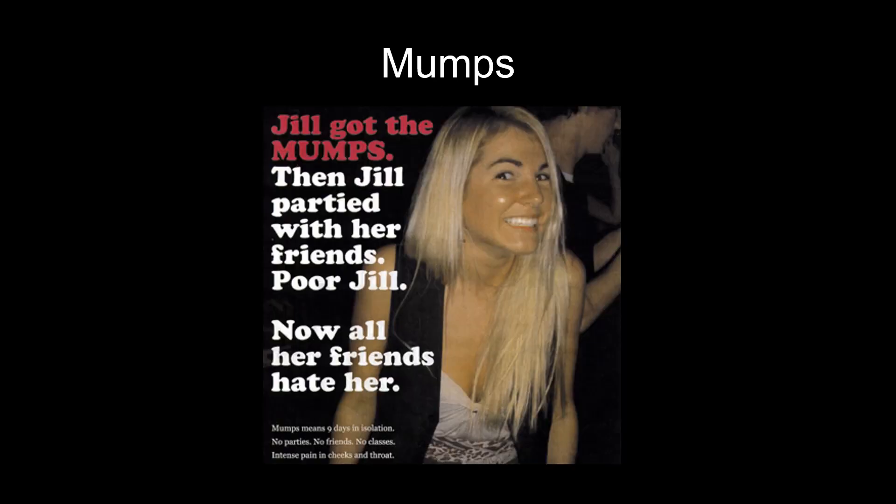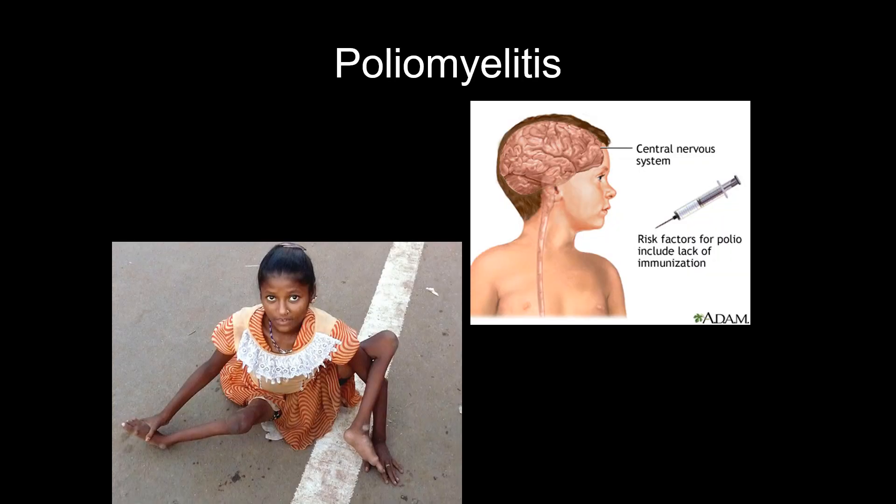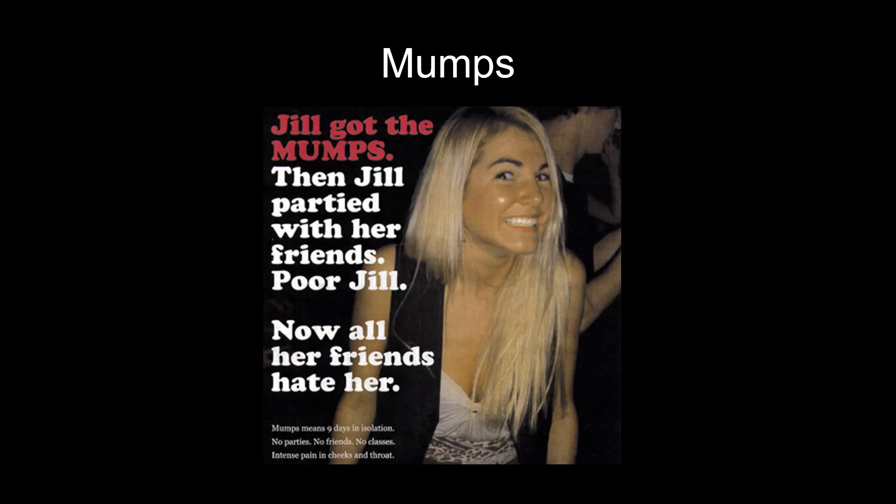Mumps is an acute infection of the salivary glands. The hallmark symptom is swelling of the salivary glands — especially the parotid glands on the sides of the face — causing pain and fever. It gets better in most people, but it can lead to serious complications including encephalitis and sterility in men due to testicular swelling. There are reasons we have vaccines for this — it's part of the MMR vaccine.